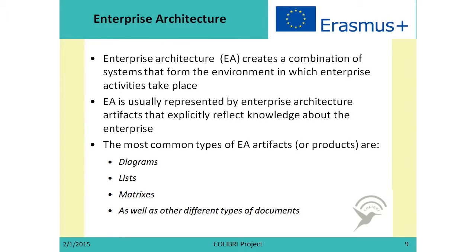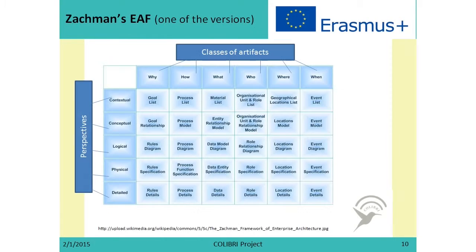The most common types of enterprise architecture artifacts — or in other words, the products of enterprise architecture — are diagrams, lists, and metrics, and also other documents useful for representing knowledge. Now let us have a closer look at one of the enterprise architecture frameworks, which is the Zachman framework.